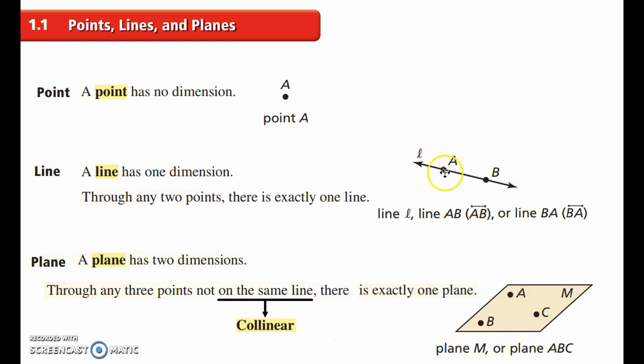So we have collinear points on the same line, and we also have a term called coplanar, which is points that lie in the same plane. So collinear, same line, coplanar, same plane.